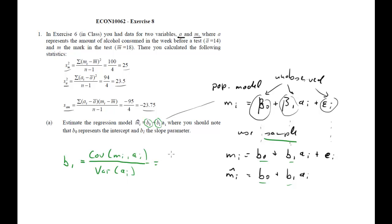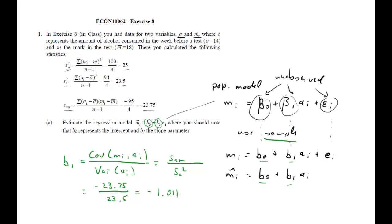Using our results, b1 is s_am divided by s_a squared. Therefore, that is negative 23.75 divided by s_a squared, which is 23.5. So we have a value that is negative and very close to 1: negative 1.011. This is our estimated value for beta 1, and we call that b1.